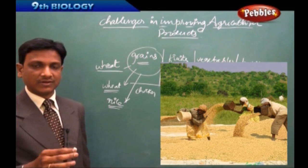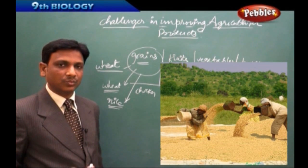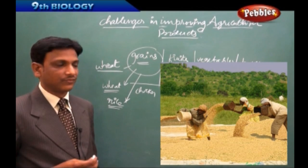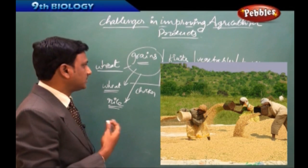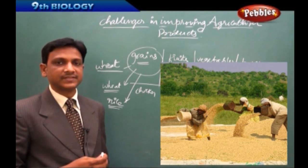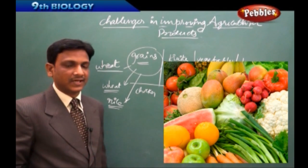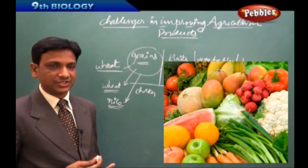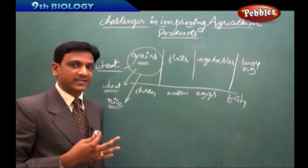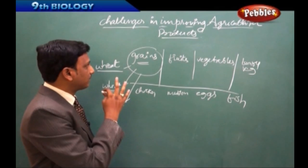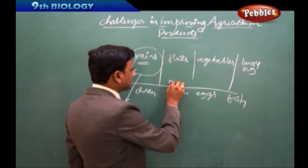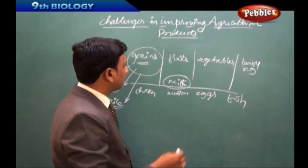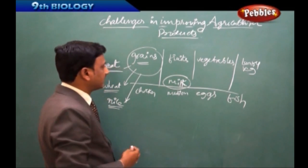Along with rice, we make curries with dal, eggs, fish, chicken, or other vegetables. We also consume fruits, and we make curries with leafy vegetables like methi, amaranthus, and spinach. Milk is also one of the agricultural products — it is a dairy product — and farming of animals also comes under agricultural products.